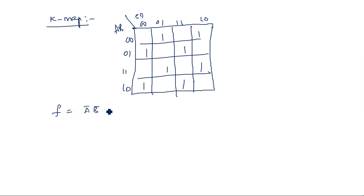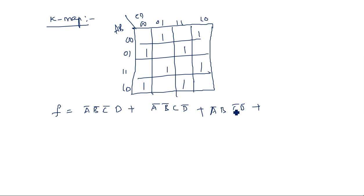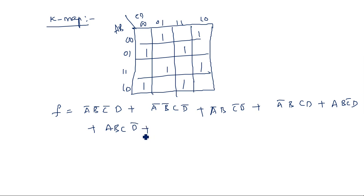From the K-map, the Boolean expression becomes: F equals A-bar B-bar C-bar D plus A-bar B-bar C D-bar plus A-bar B C-bar D-bar plus A-bar B C D plus A B C-bar D plus A B C D-bar plus A B-bar C-bar D-bar plus A B-bar C D.